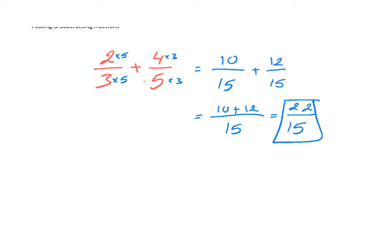There's another way to find the LCD: find the LCM, the least common multiple, between three and five. That's one way to find the LCD here.